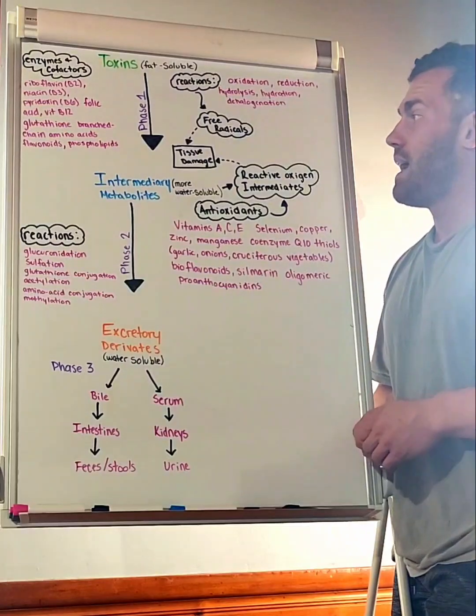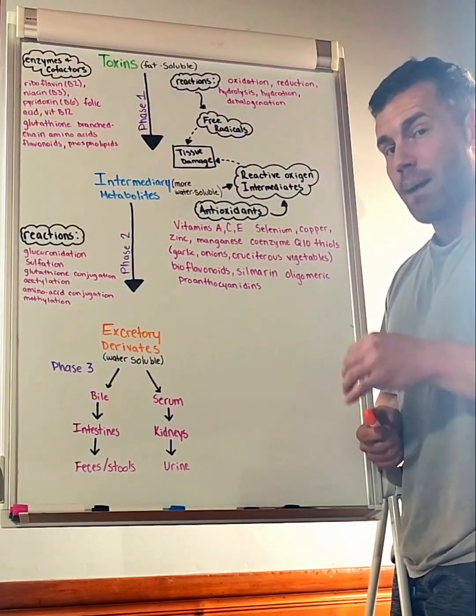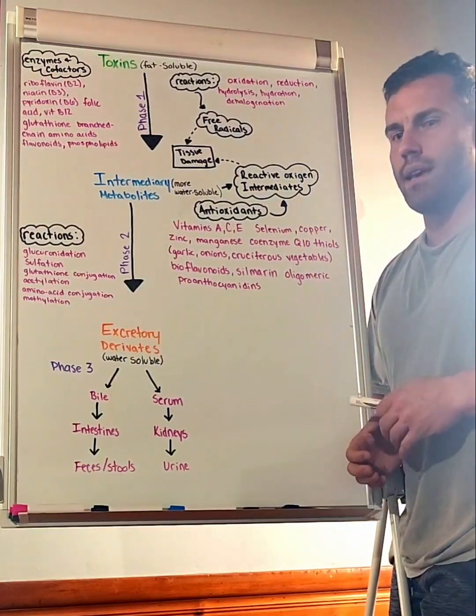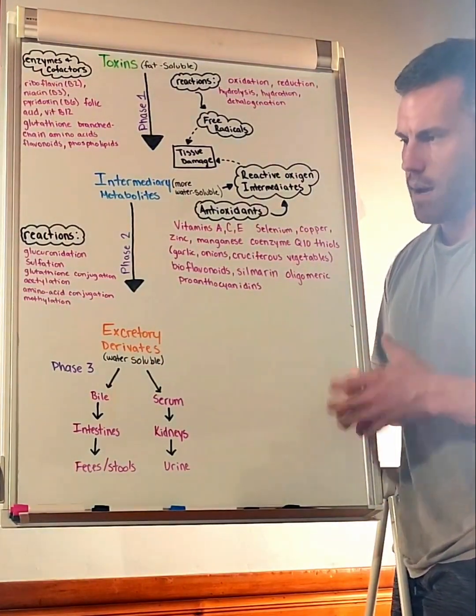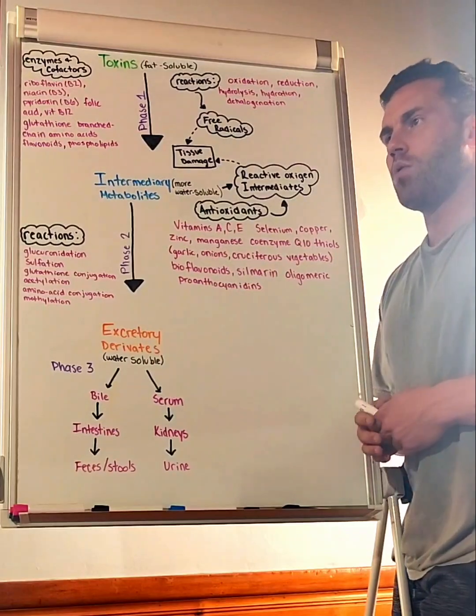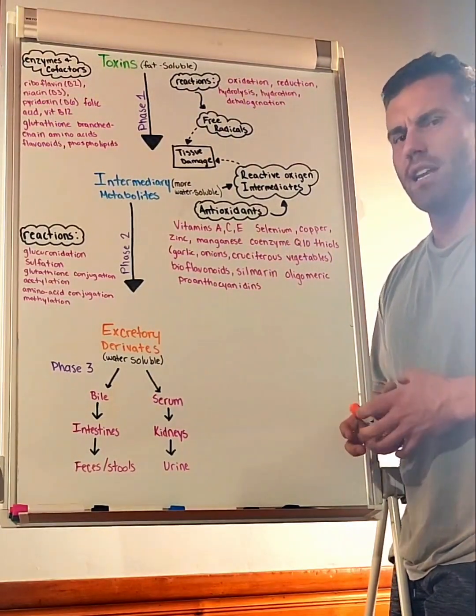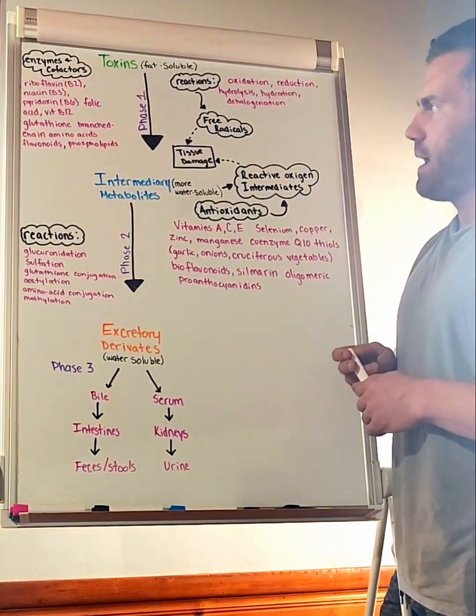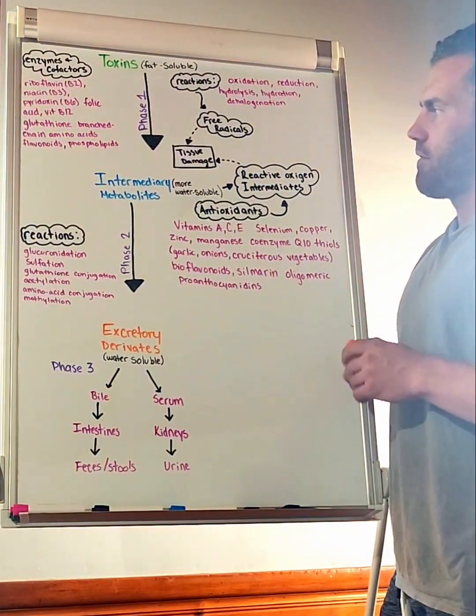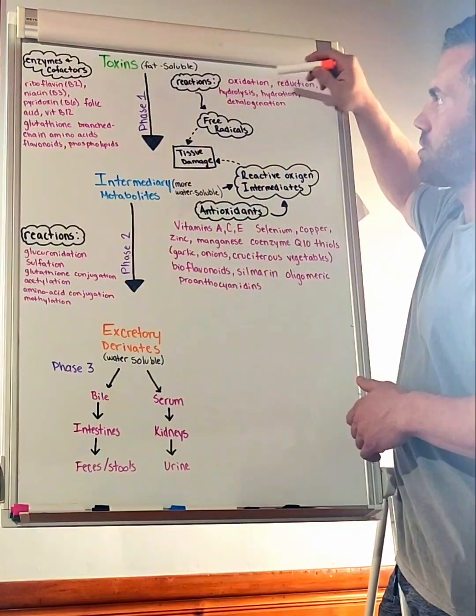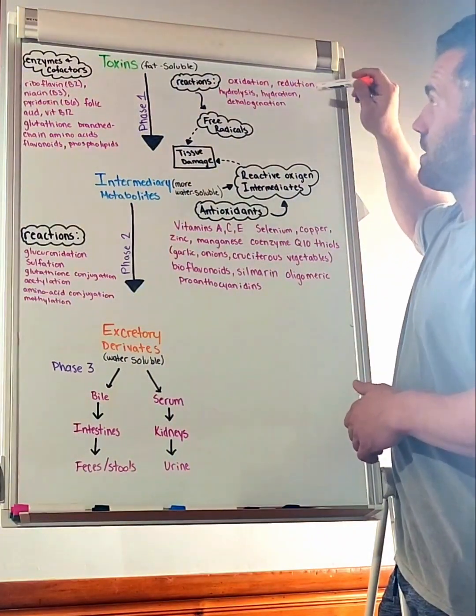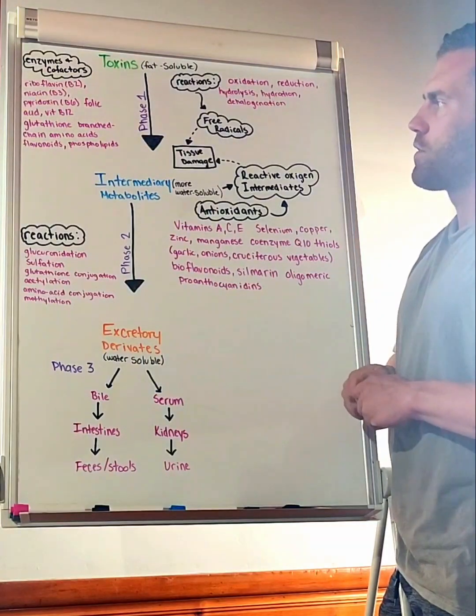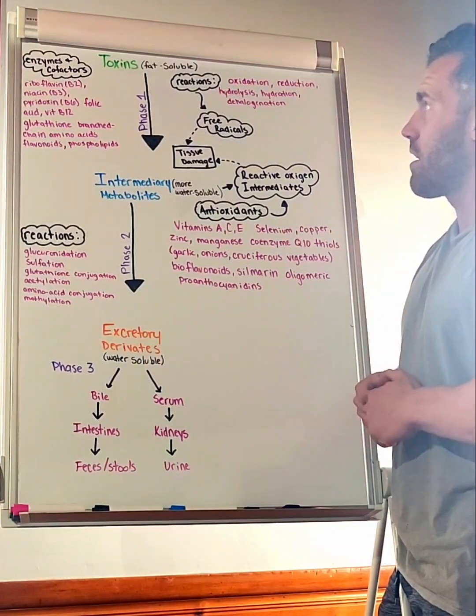During this process, we are trying to essentially break down these toxins or waste products or molecules into water-soluble metabolites that can be sorted. Think of phase one as a breakdown phase—things come in, we're breaking them down into more manageable compounds, smaller compounds where they can move into phase two.